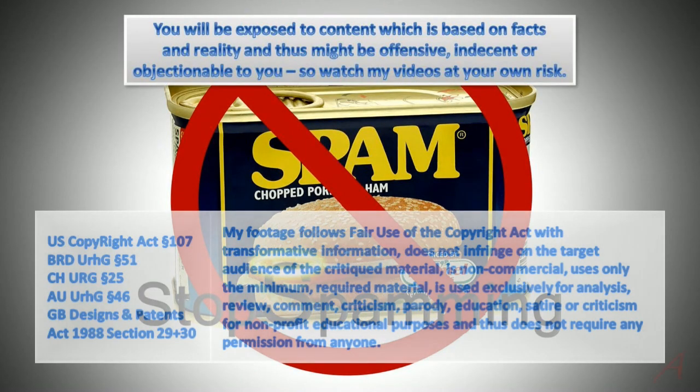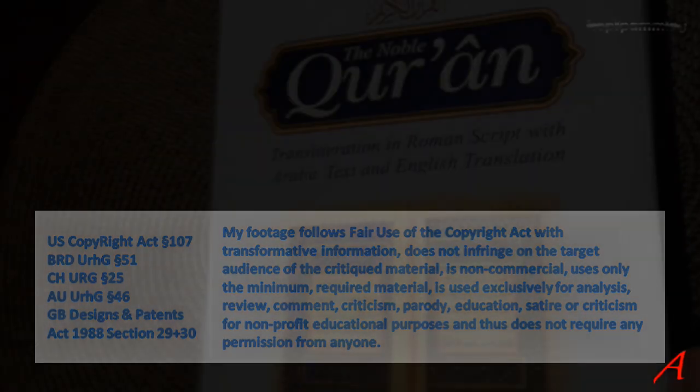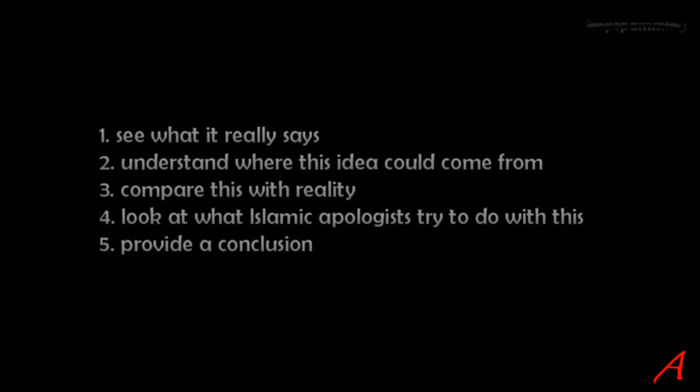Hi guys, I'm going to be talking about the backbone and the ribs because in the Quran we have a claim that a creator god uses a liquid to create human beings and that this liquid originates between the backbone and the ribs. Now to clear this up I will use a structure where I do five things. First I see what it really says, then I try to understand where this idea could come from, I compare this with reality, then I look at what Islamic apologists are trying to do with this, and I provide a conclusion.